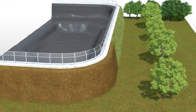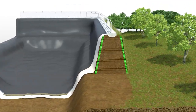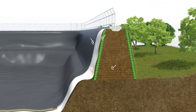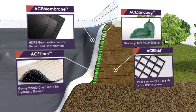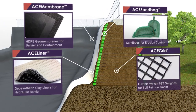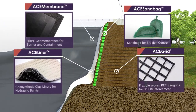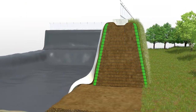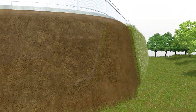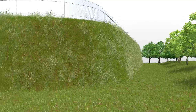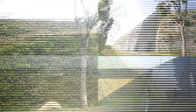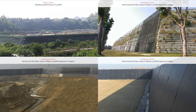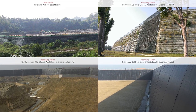Landfills: ACE grid geogrid can be used in landfills to increase the strength and stiffness of the embankment. Laying ACE membrane inside the embankment will isolate the waste material and avoid groundwater contamination. The reinforced embankment could be built with in-situ soil and is able to economically increase the storage capacity. Moreover, it can also be planted with vegetation outside to improve the visual appearance of the site.